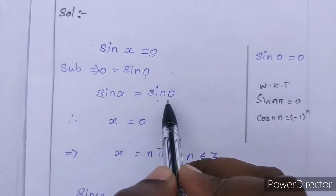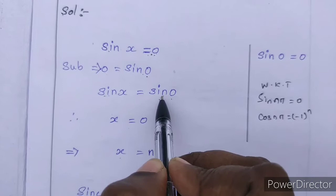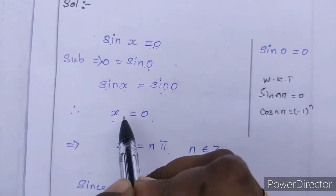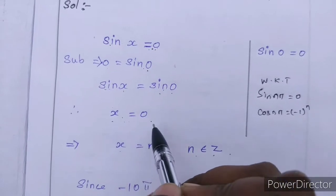So sin x = sin 0. We are getting x = 0. So one value is 0.